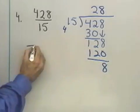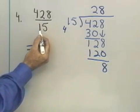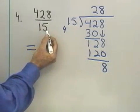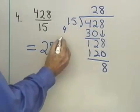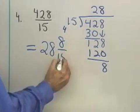Okay, so I have a remainder of 8. That means that 428 over 15, that improper fraction as a mixed number is 28 and 8/15.